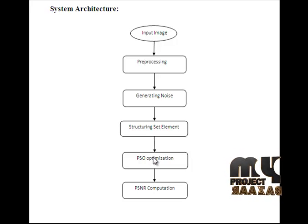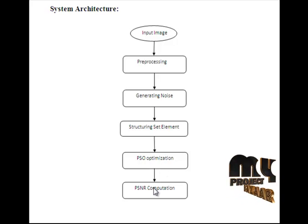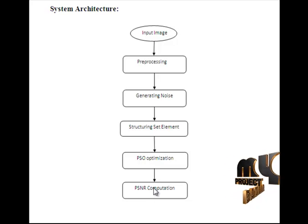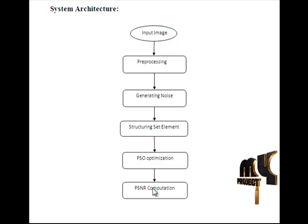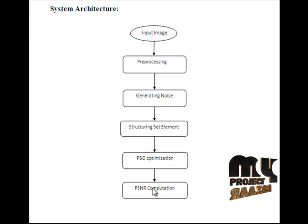After changing the mean value of the pixel, we get the denoised image. The denoised image is passed to the PSNR computation. PSNR is peak signal-to-noise ratio. It is a ratio between the maximum possible power of a signal and the power of the corrupting noise that affects the fidelity of its representation. Here, we get values from the original image versus the denoised image to calculate how much level of noise has been removed.